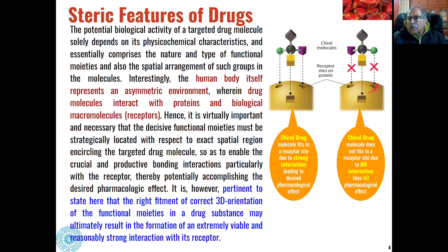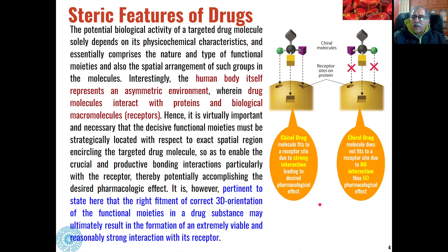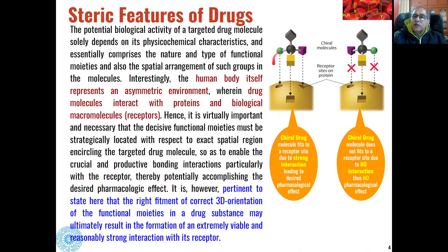This strong interaction results in the pharmacological effect. Whereas in another orientation of the molecule, the functional groups or atoms do not fit into the receptor sites correctly, and because of this there is no interaction between the chiral drug molecule and the receptor sites on the protein, hence there will be no pharmacological or biological effect. There needs to be a strong interaction between the drug molecule and receptor sites, achievable only if the arrangement of groups in the drug molecule is proper and oriented correctly with respect to the receptor site.